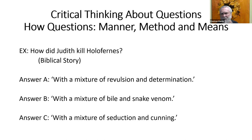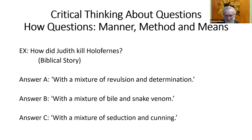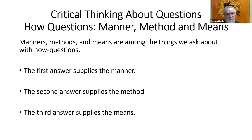Notice the question: how did Judith kill Holofernes? This too is an ambiguous question — is it a question about manner, about means, or about method? I might say: with a mixture of revulsion and determination. Or I might say: with a mixture of bile and snake venom. Or I might say: with a mixture of seduction and cunning. While all of these might be true, they are all answers to different questions. The first answer supplies the manner, the second answer supplies the method, and the third answer supplies the means.